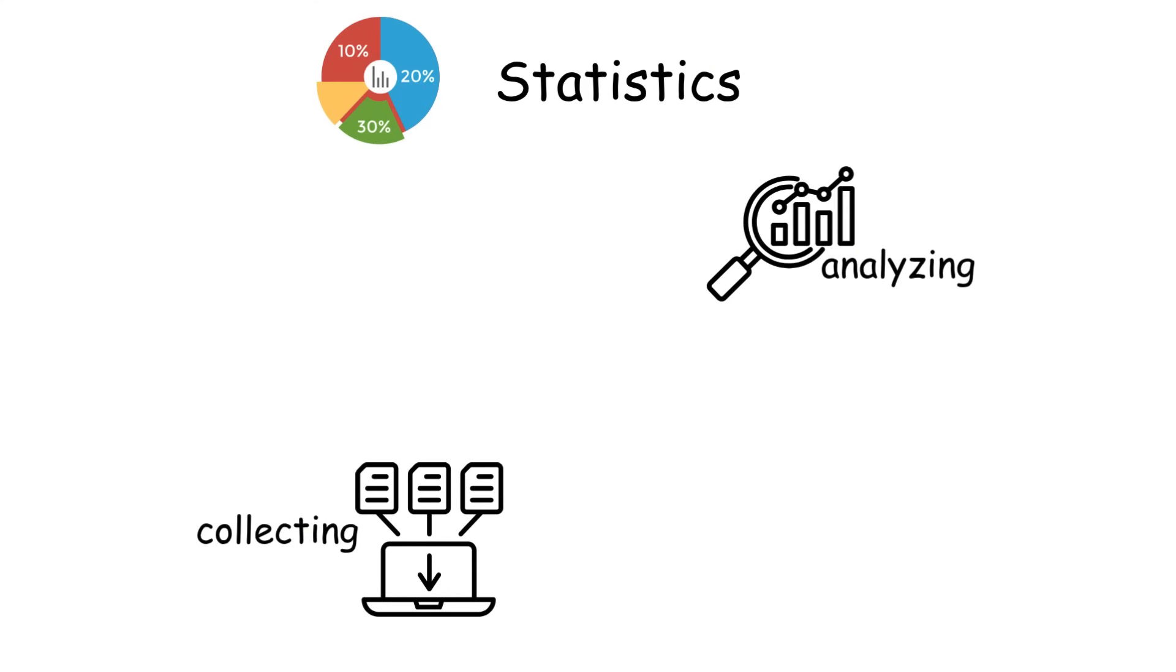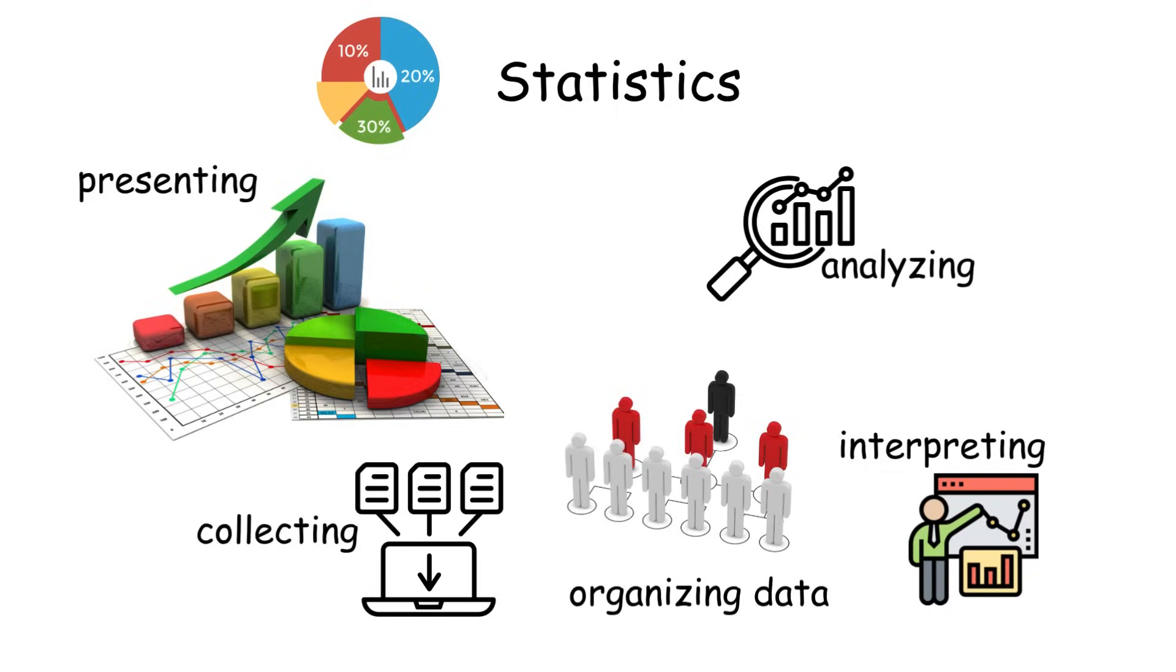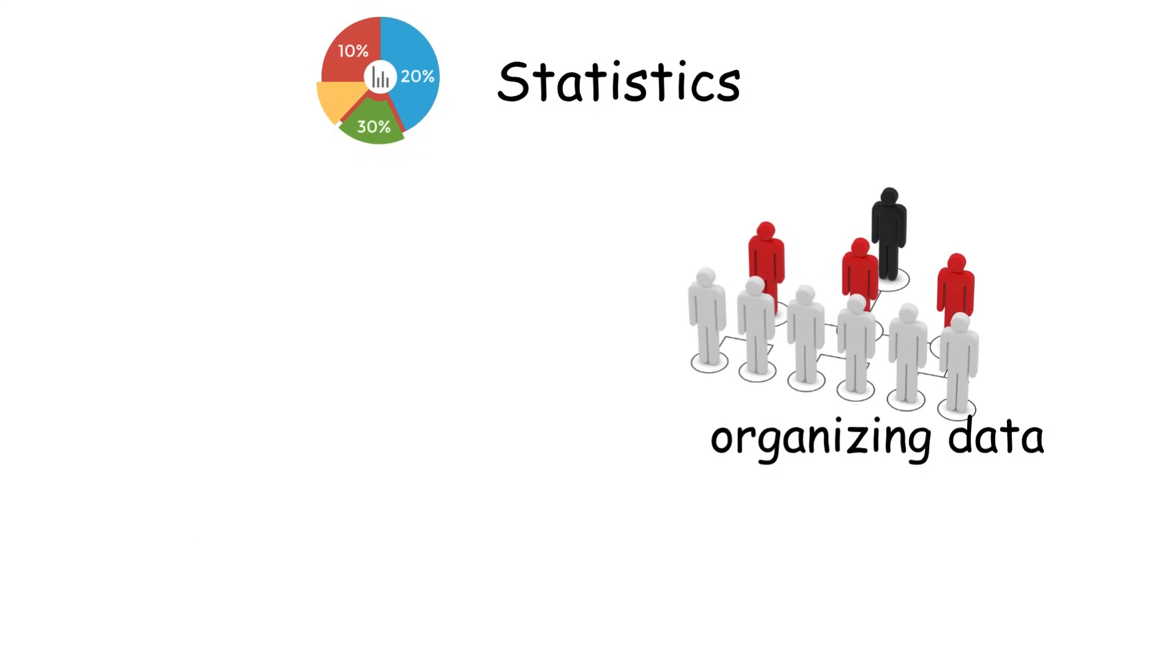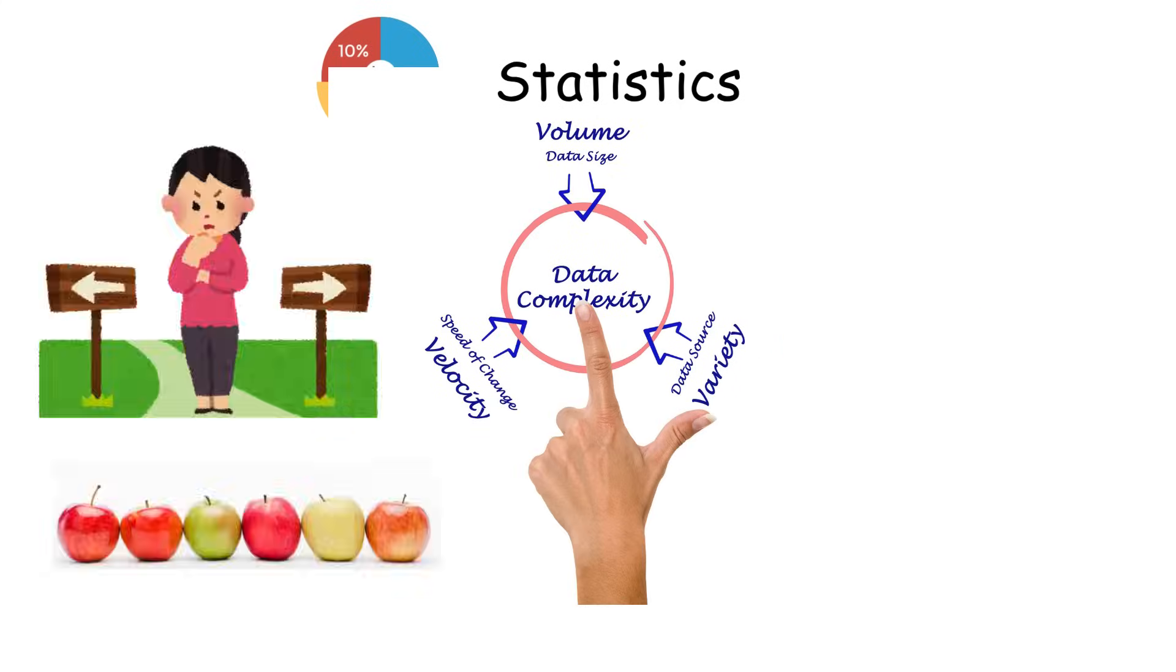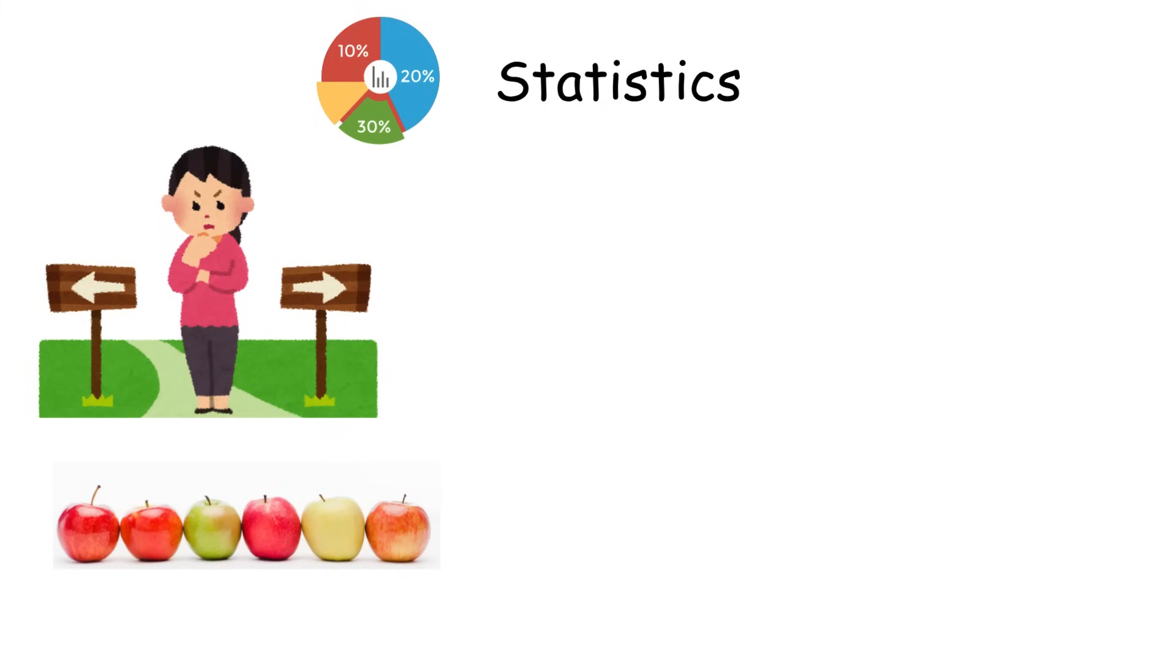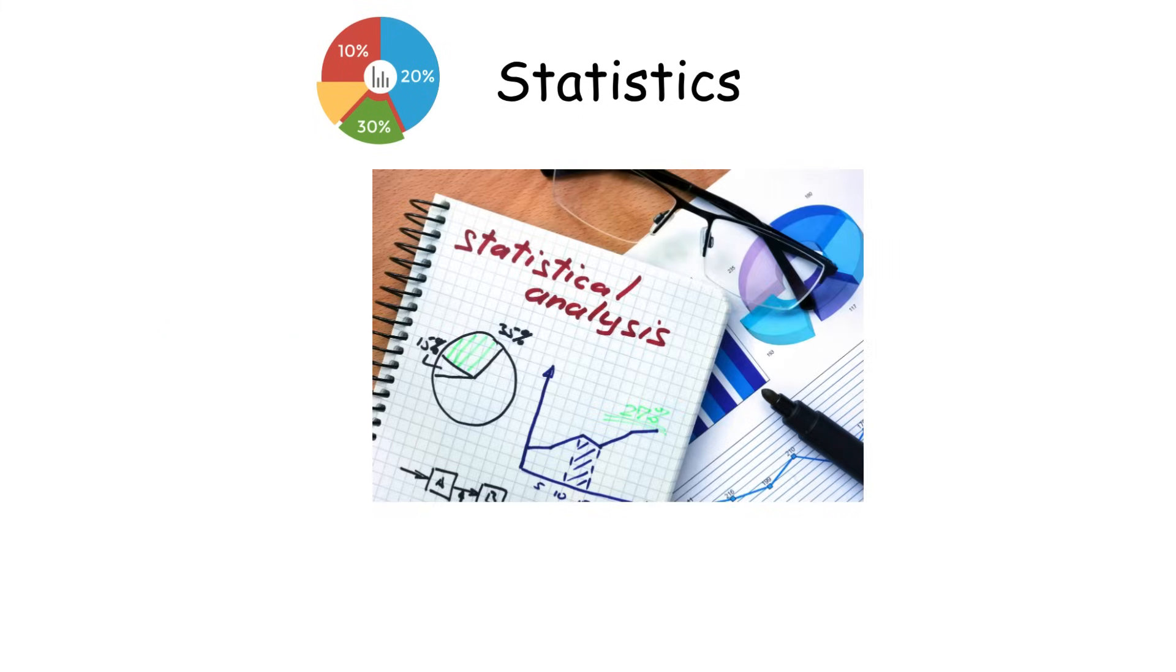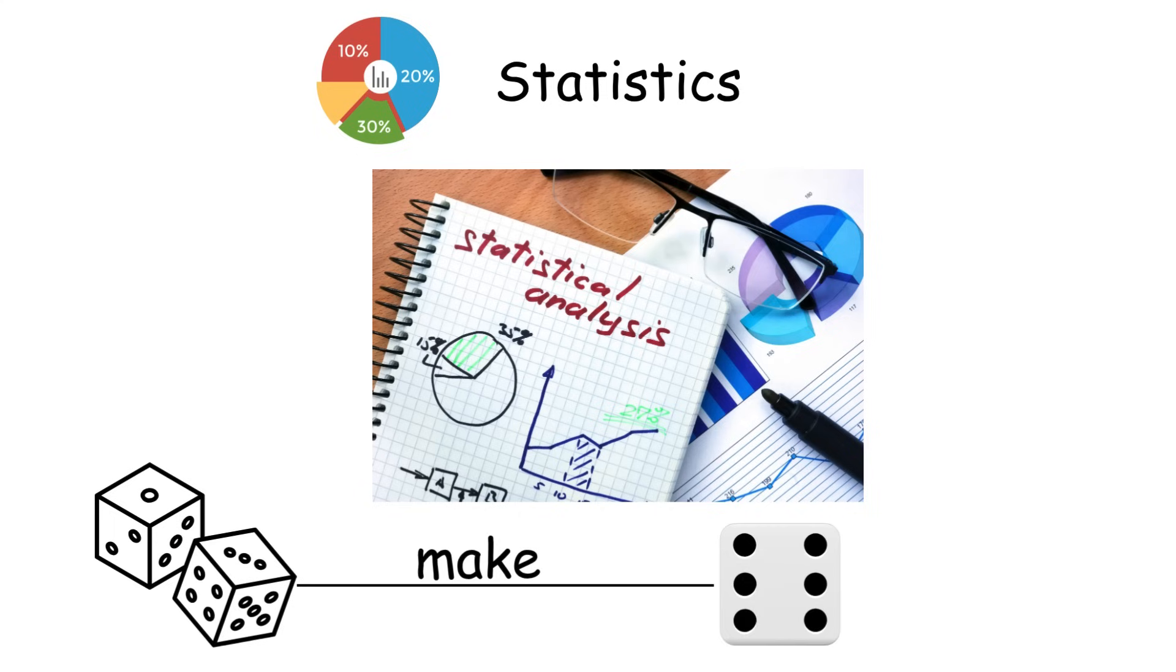Statistics. Statistics is a branch of math that focuses on collecting, analyzing, interpreting, presenting, and organizing data. It offers tools to summarize and understand complex data sets. Two key ideas in statistics are uncertainty and variation, which show up naturally in real-world data. Statistical analysis measures these uncertainties, often using probability theory to model random events and make smart predictions or decisions.